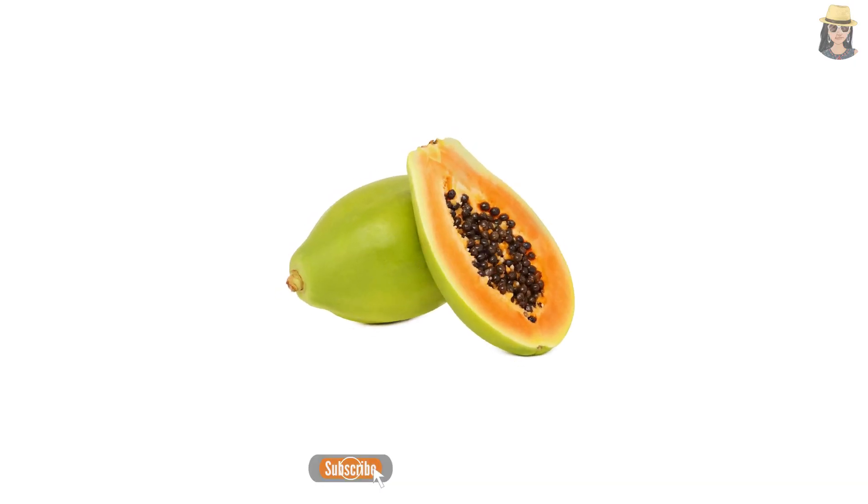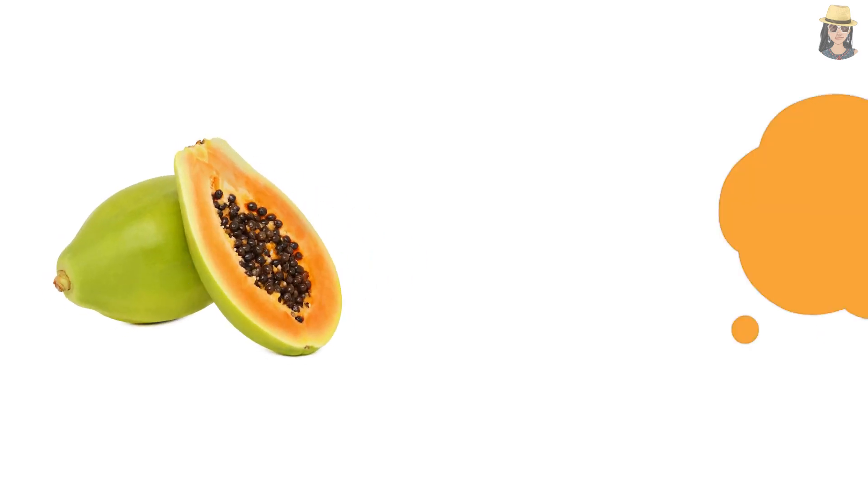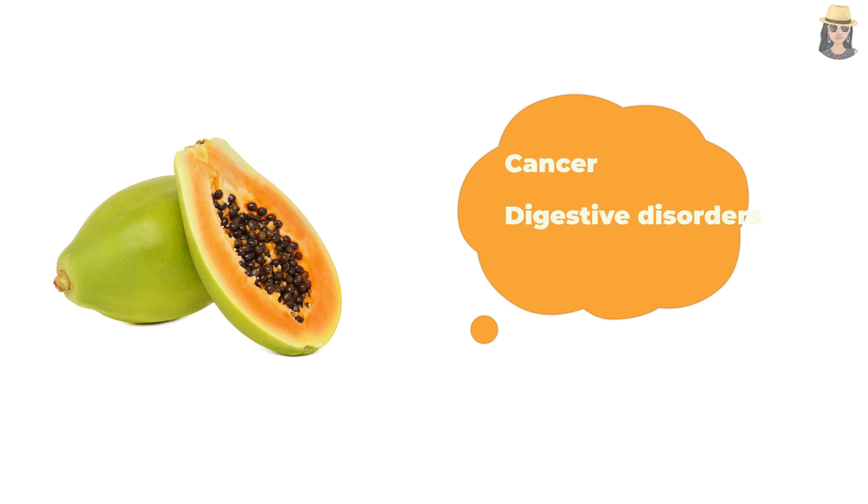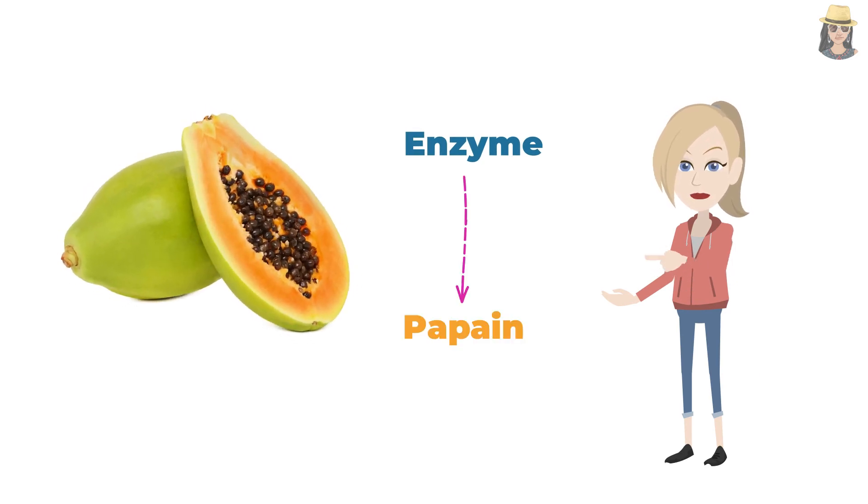100 grams of papaya can offer you up to 68% of the recommended value of vitamin C to your body. Papaya is loaded with plenty of essential nutrients and antioxidants so it can help prevent the risk of cancer, digestive disorders, diabetes and mental health issues. Another good news is that the enzyme named papain present in papaya proved to reduce menstrual pain for women.